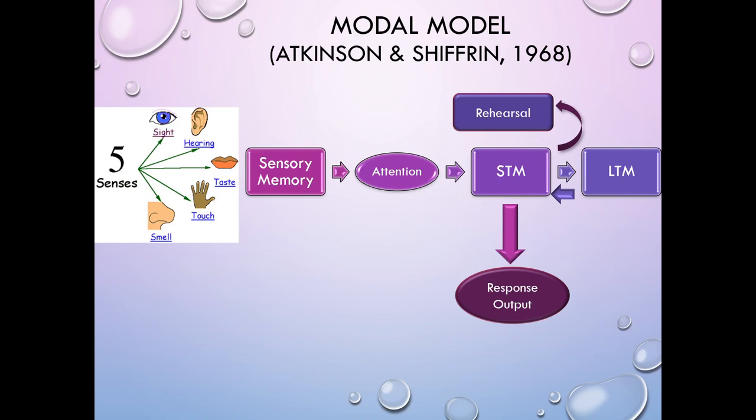Short-term memory is super important as a structure in the Atkinson and Shiffrin model because it's the mediator between the outside world and your long-term memory store, and between your long-term memory store and the outside world. A simple way to think about your short-term memory is that it's whatever you're thinking about at the moment — though that's an awfully close definition to working memory, so it's kind of tricky.